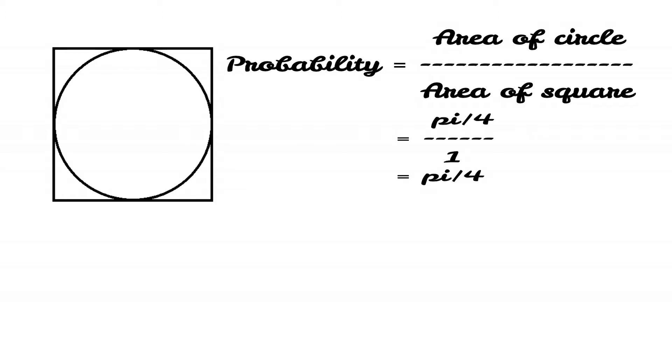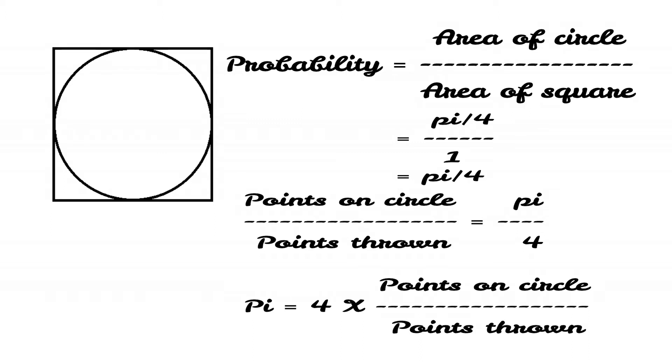So, we can calculate total number of points and points that lied in the circle and use this simple formula. Pi equals to 4 times total number of points on circle by total number of points thrown.